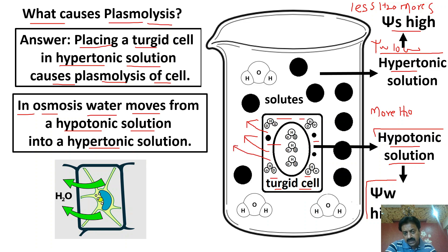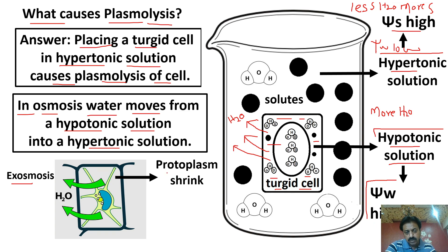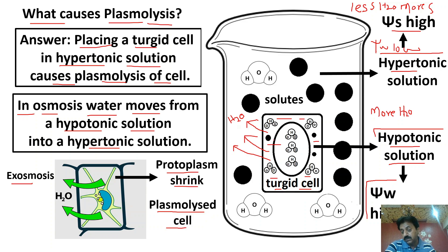Jaise hi yeh cell hypotonic solution se contact mein aaya, hypotonic cell paani lose kar raha hai aur hypertonic solution paani gain kar raha hai. Toh paani bahar chala jaayega — is process ko hum Exosmosis kehte hain. Aur dekhen, yahan pe cytoplasm ka mass, protoplasm ka mass decrease ho gaya — is condition ko hum plasmolysis kehte hain. Protoplasm mein shrinkage ho gayi, cell wall se separate ho gaya — this is called a plasmolyzed cell. Toh dear students, jab bhi hum ek turgid cell ko hypertonic solution mein place kar denge, Exosmosis ki wajah se plasmolysis hota hai.